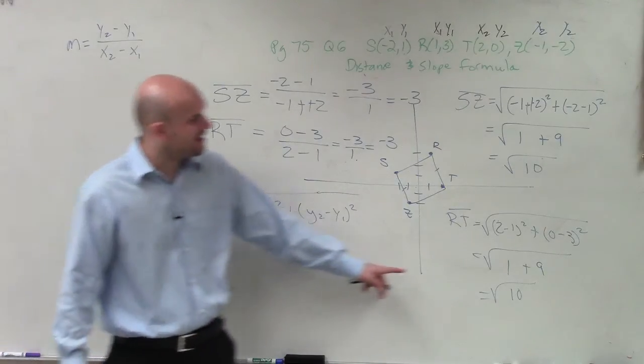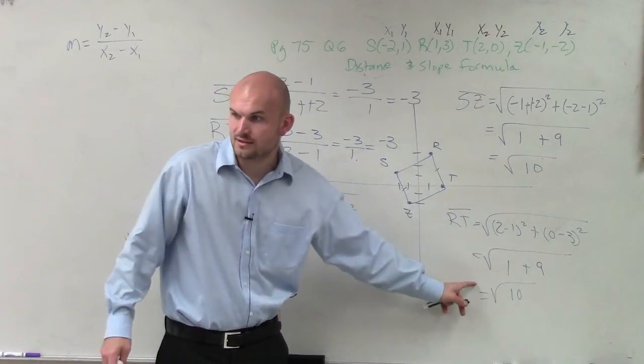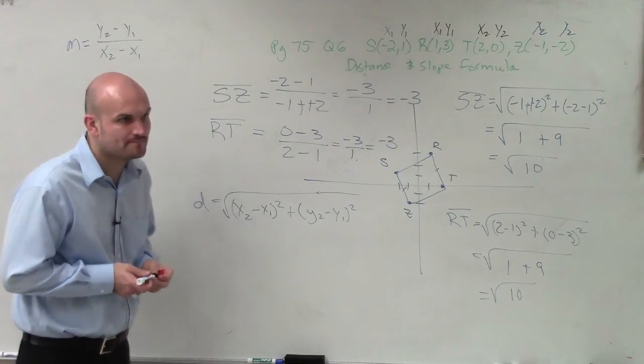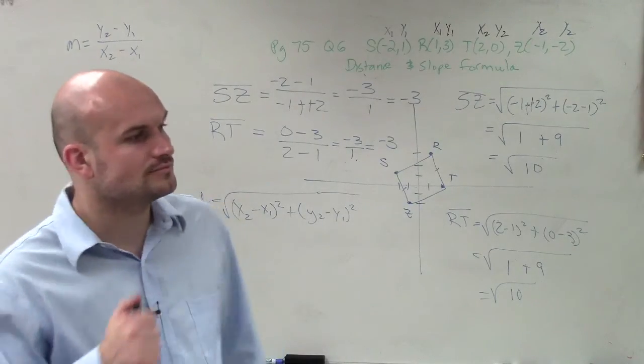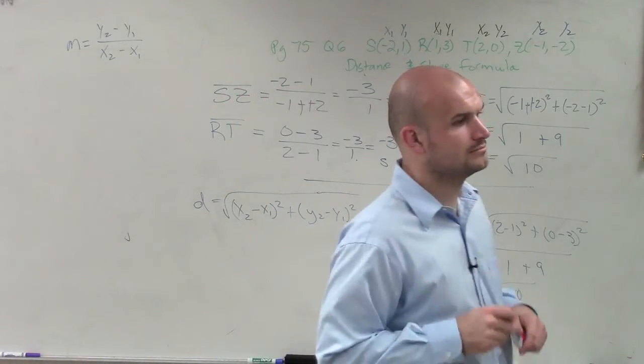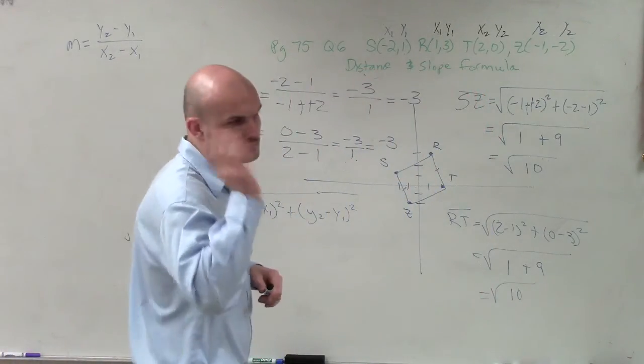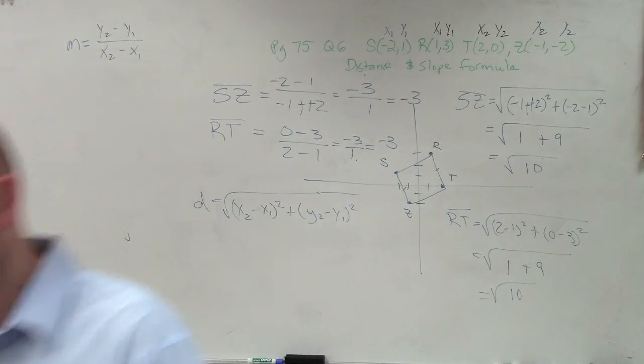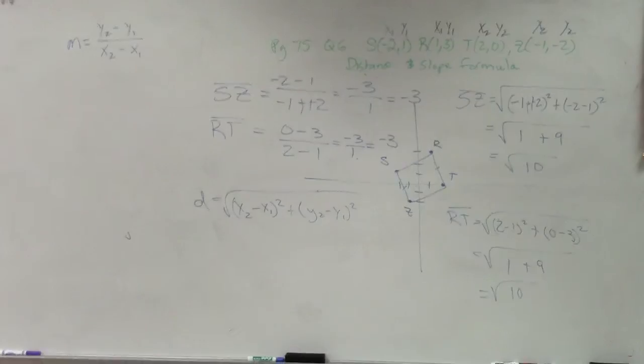OK. So what you guys can see is, do they have the same distances? Yes. And since they have the same distances, they also have the same slopes. OK? Yes? I have a question. I do S, instead of S, Z, R, T, S, R, T, Z. Not a problem. As long as you have two opposite sides. OK. All right. All right.